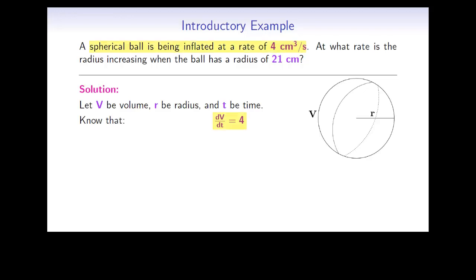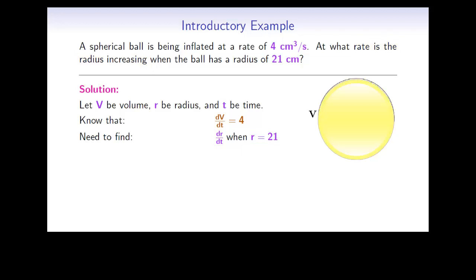We know that dV/dt is equal to 4 since the volume is increasing at a rate of 4 centimeters cubed per second. It's the word 'rate' that tells us we're talking about a derivative. We need to find dr/dt when R is equal to 21. In order to solve for dr/dt, we need to find a relationship between the thing we know, the volume, and the thing we want to find, the radius. Recall that the volume of a sphere is given by V equals 4/3 pi R cubed.